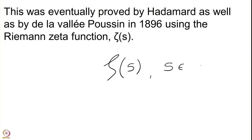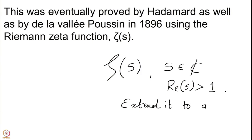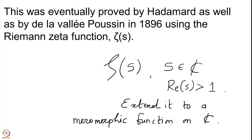Riemann had introduced this function — zeta is a Greek symbol. Here s is a complex number and normally we assume the real part of s is bigger than 1, where the function has very nice properties. We would like to extend it to the whole complex plane as a meromorphic function on ℂ, and then there is the famous line Re(s) = 1/2, where we are supposed to have lots of non-trivial zeros. All the so-called non-trivial zeros are supposed to lie only on this line — this is part of the famous Riemann hypothesis. This zeta function was used to prove the result conjectured by Legendre and Gauss 100 years earlier.